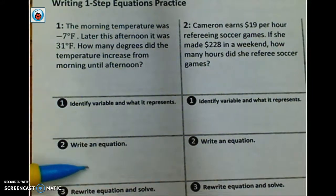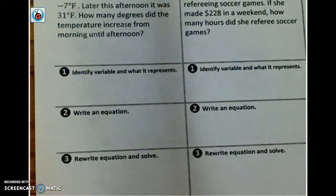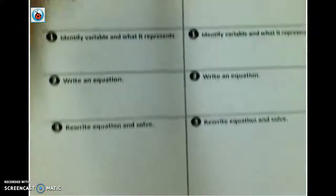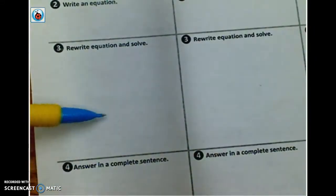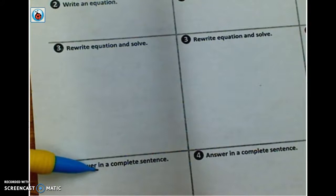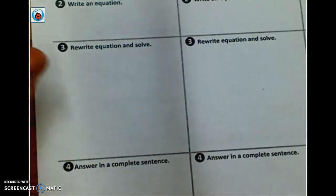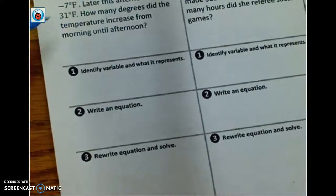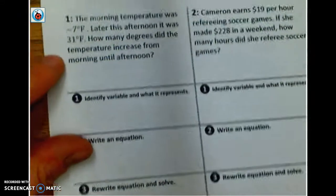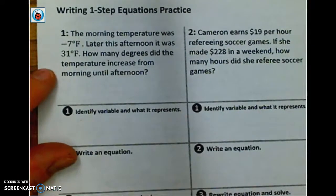Alright, so our main parts are that the first thing we want to do is identify the variable, which is our unknown, and what we're using it to represent. We're going to make an equation, we're going to go ahead and solve that equation. And then finally, we're going to make sure that we take our answer and put it in a complete sentence to make sure that our answer makes sense.